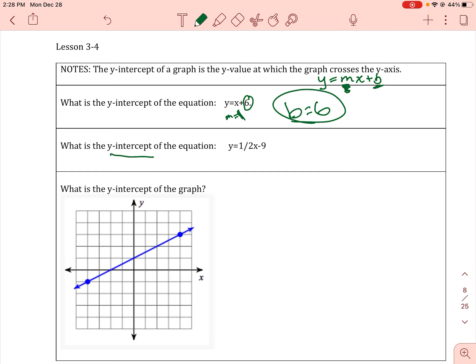What is the y-intercept of this equation? Again, the number in front of x, the coefficient of x, is my slope, so that's m. I want to find b.